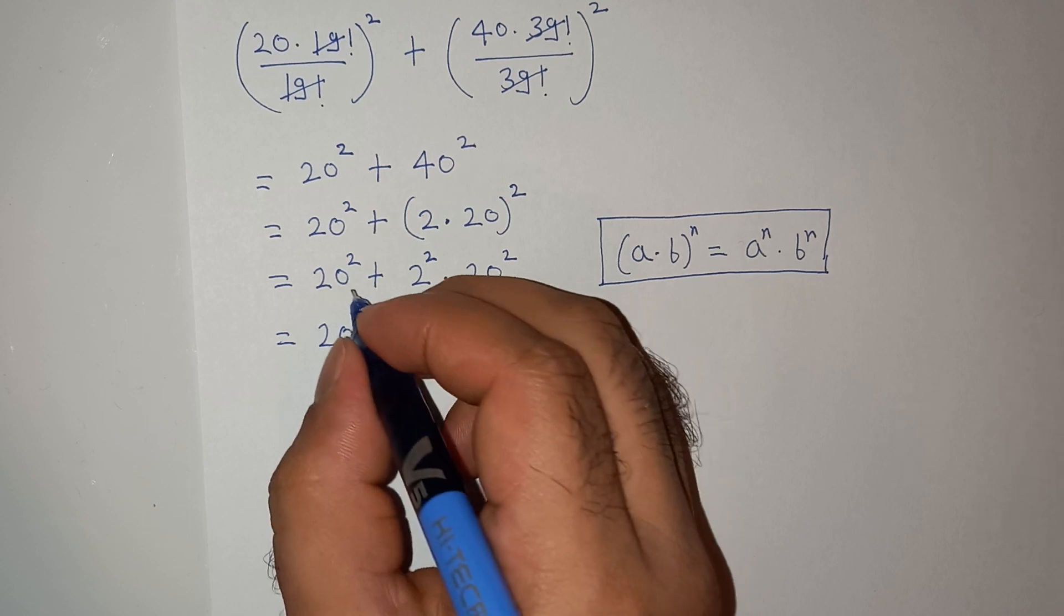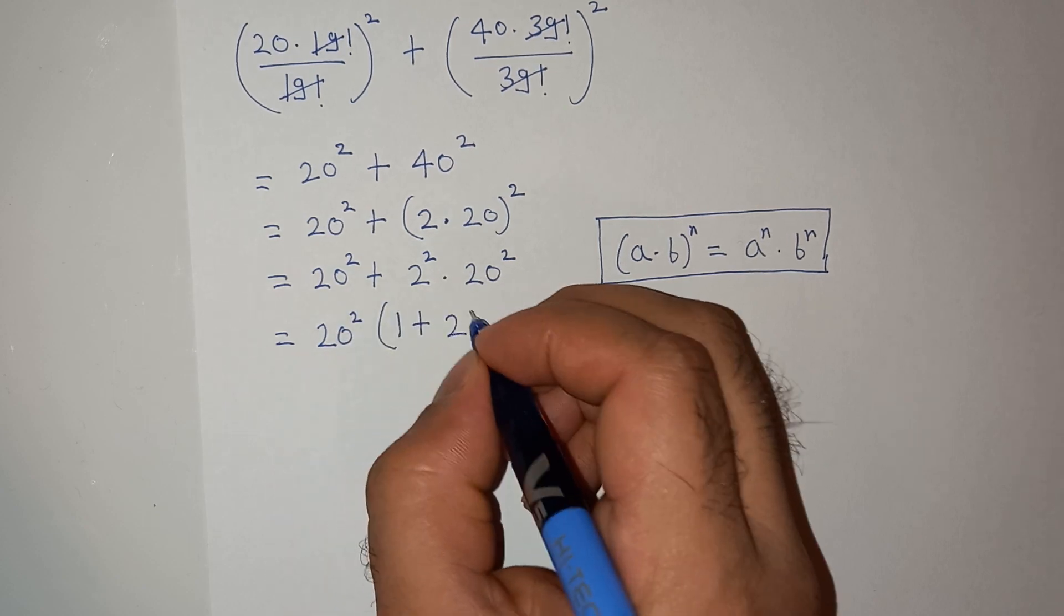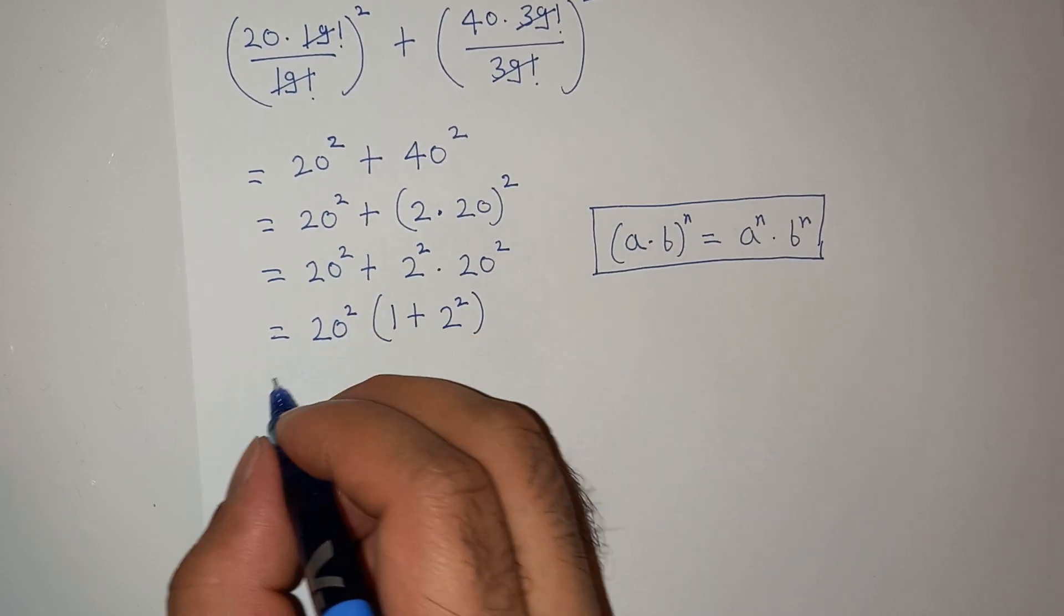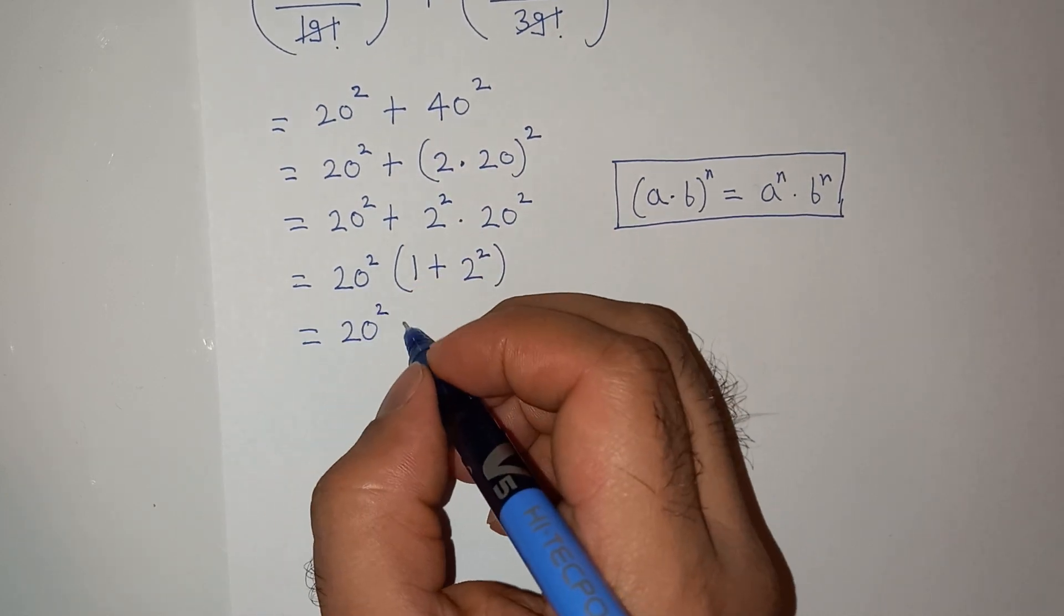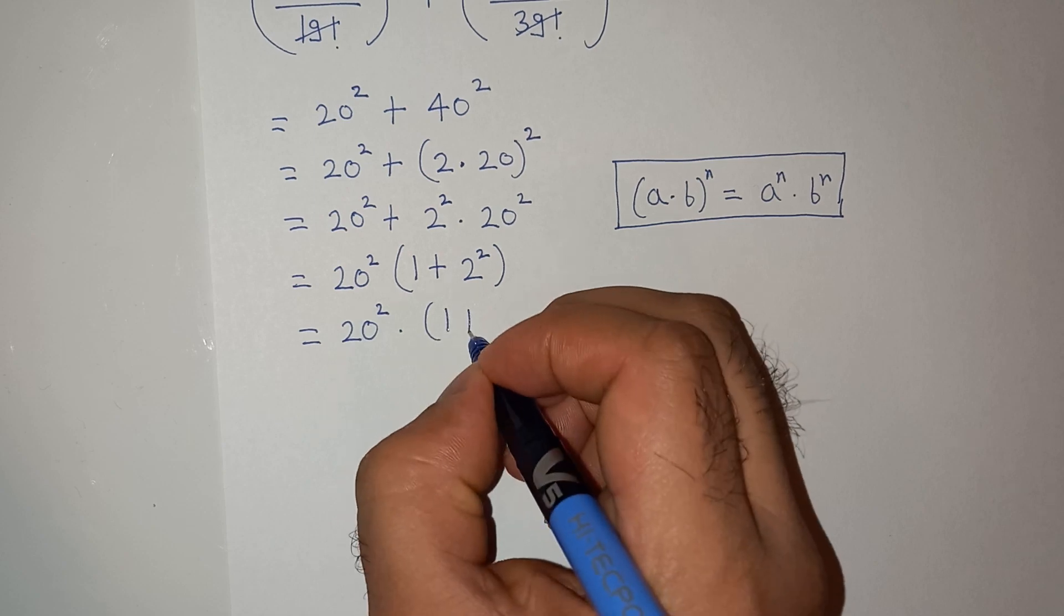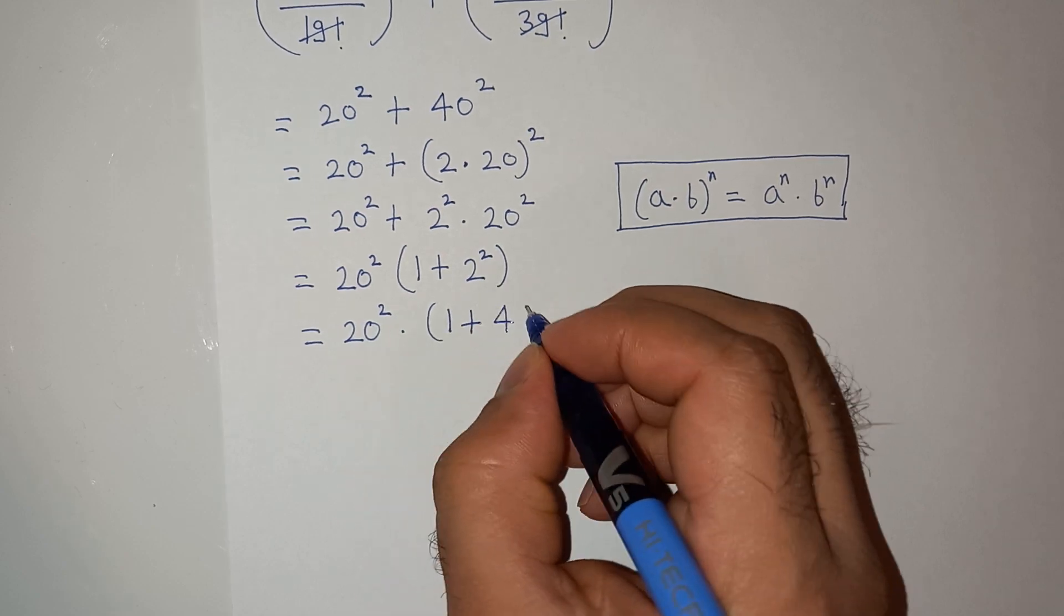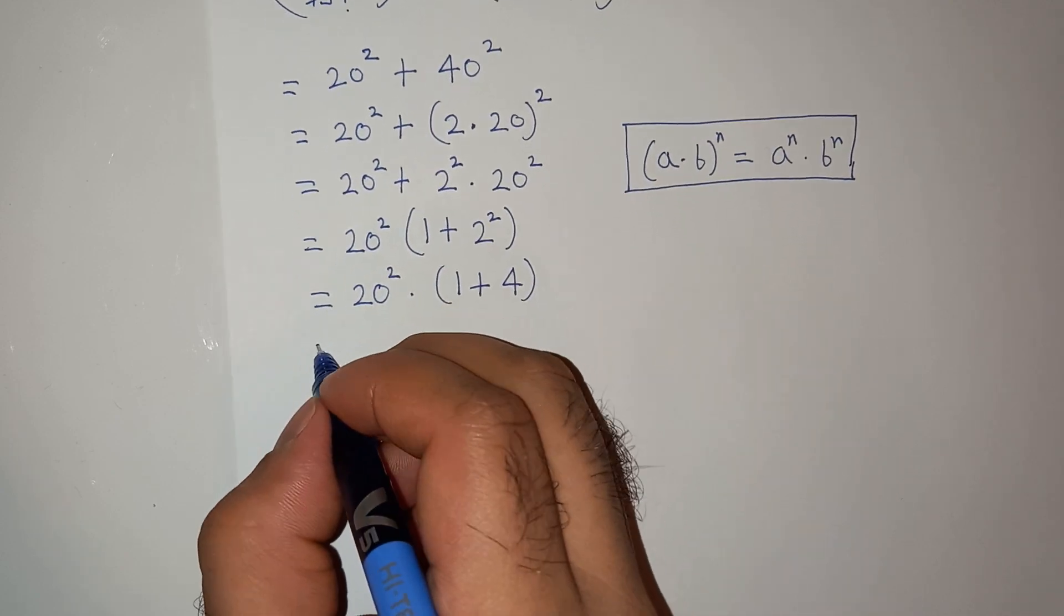So this will be 20 square multiplied by, 1 plus 2 square is 4, so we have 20 square multiplied by 1 plus 4 is 5.